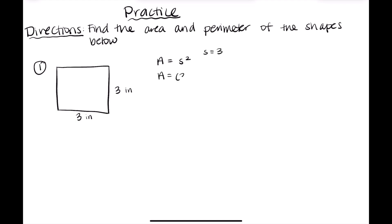So we have that side length is three here. So it'll be area equals three squared. We know that three squared breaks up into three times three. So the area would be nine.